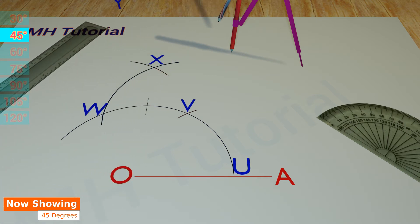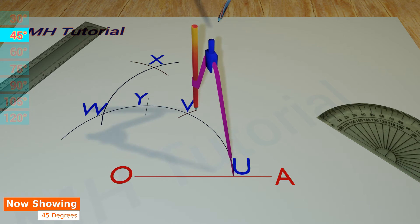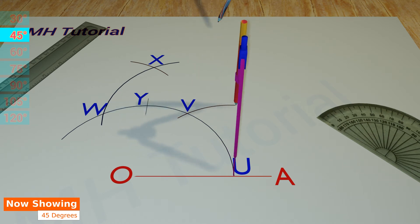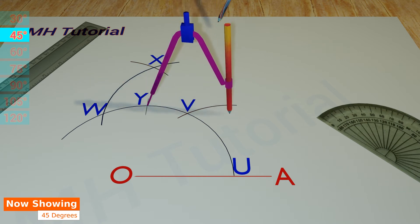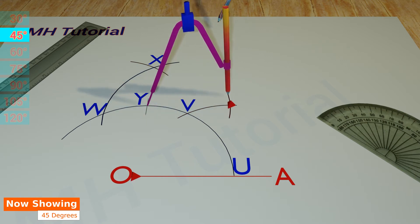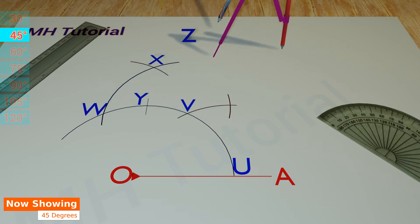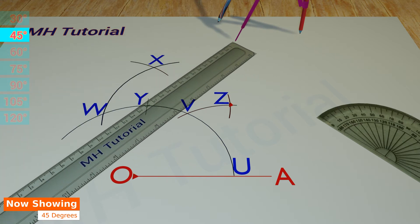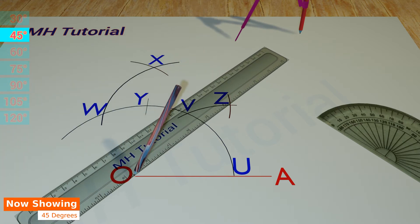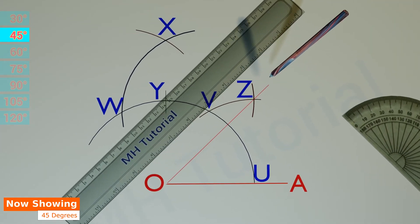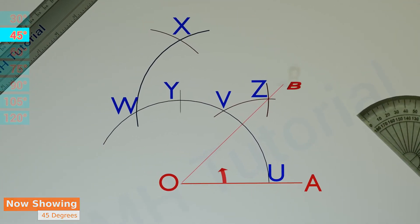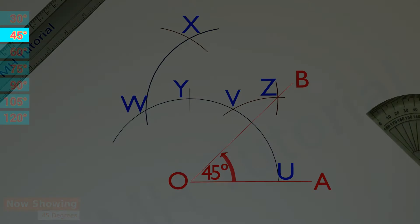The point is named as Y. Then two circle arcs of the same radius are drawn from point U and point Y respectively. These two arcs meet at point Z. Finally, with the help of a ruler and a pencil, point Z and point O are connected. Hence, angle AOB is a 45 degrees angle.